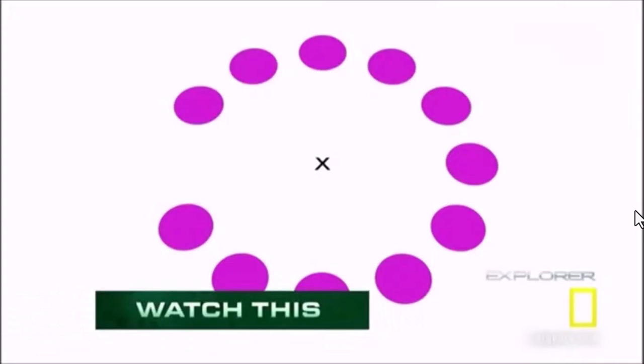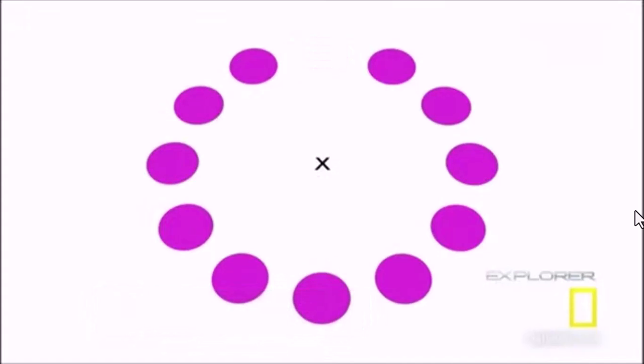Let's start with this illusion. Stare at the X in the middle of the image. Do you see the green dot moving around in a circle? Now try to follow that green dot with your eyes. Nothing there, right?